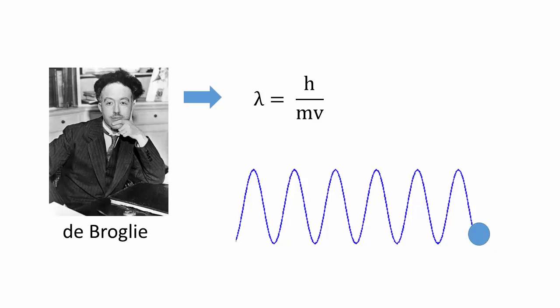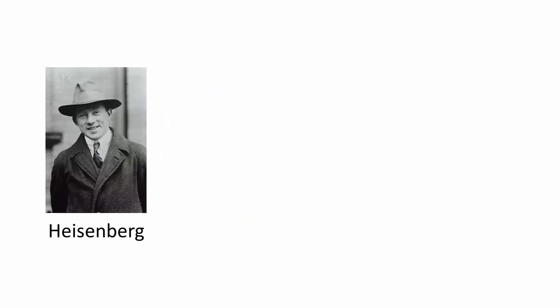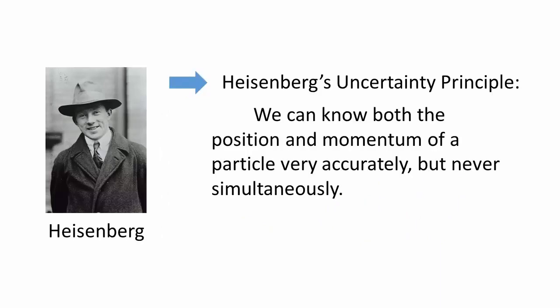Building upon matter's wave-particle duality, Heisenberg proposed the uncertainty principle, stating that it is impossible to know with infinite precision both the position and momentum of a particle. Note that it is not a comment on the precision of our instruments. It is a fundamental law of nature.